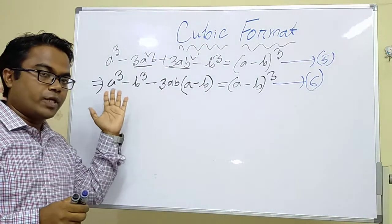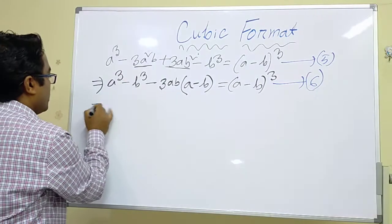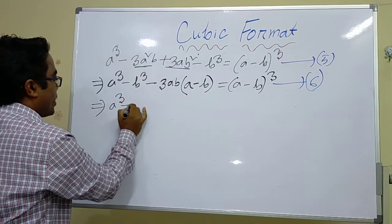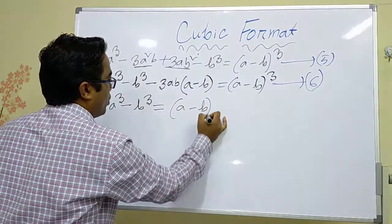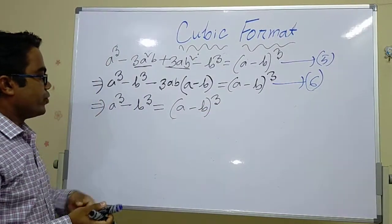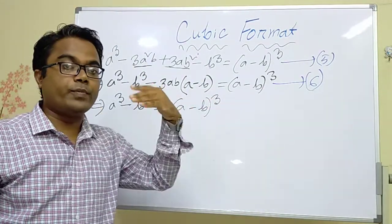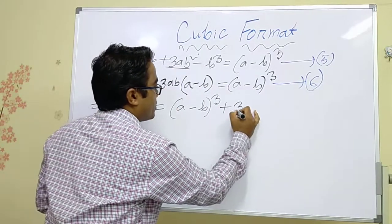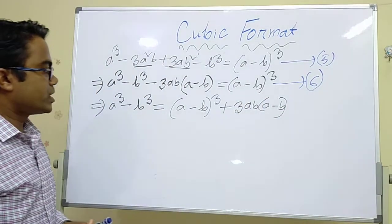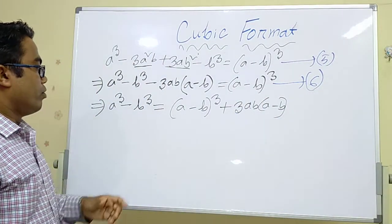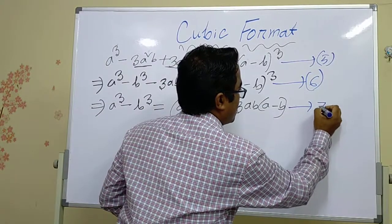If we derive the formula of a cube minus b cube, then we can write a cube minus b cube equals (a − b) whole cube. If we interchange this one from left to right, the sign changes — the minus sign becomes plus. So we can write plus 3ab into (a − b). This is the corollary form of a cube minus b cube. This is equation number 7.